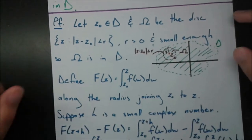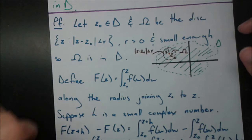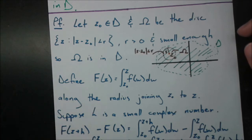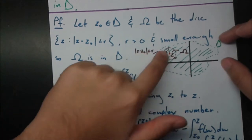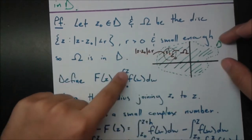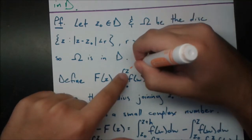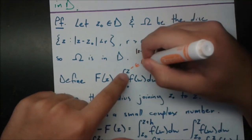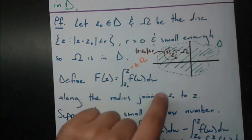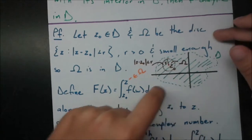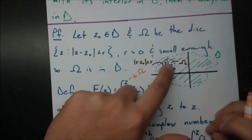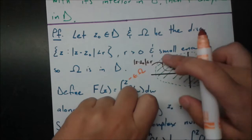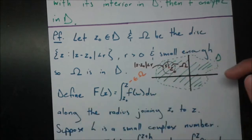We've seen this kind of setup before, where we have a center and a radius, and the radius has to be small enough so the whole disk lies completely inside our domain. Next, we're going to define a new function big F. Everything we're going to talk about from now on, we'll talk about inside this disk only, and then discuss how that applies to the whole domain at the end.